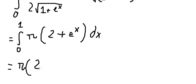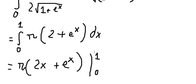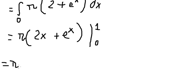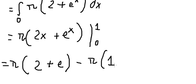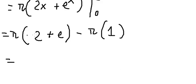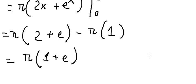Integrating, the integral of 2 gives us 2x, and e to the power of x stays the same. We evaluate from 0 to 1: substituting 1 and then 0. When we substitute 0, e to the power of 0 equals 1. Simplifying, 2(1) + e minus (2(0) + 1) gives us the final answer of 1 plus e.